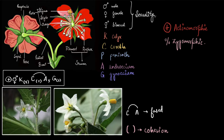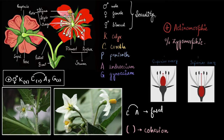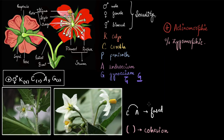Ovaries, or female parts, can be of several types — superior ovary or inferior ovary. When a flower has a superior ovary, the floral formula will show a dash underneath G. If the flower has an inferior ovary, the dash will be above G. Very often you will see this dash above and below G indicating superior and inferior ovary.